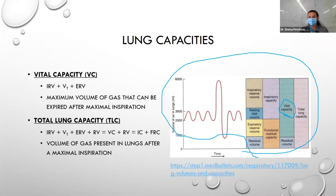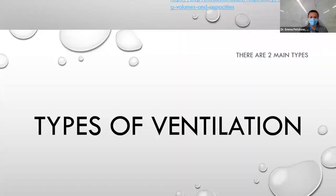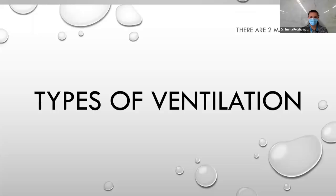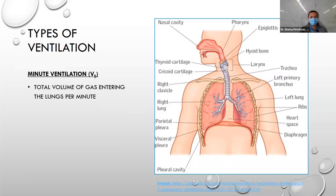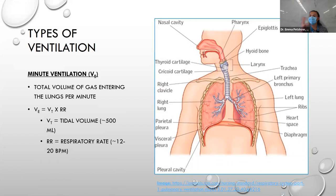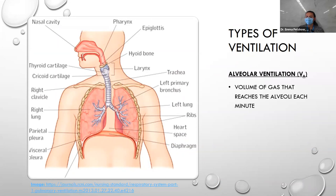There are two main types of ventilation. Minute ventilation (VE) is the total volume of gas entering the lungs per minute: VE = tidal volume × respiratory rate. Tidal volume is about 500 mL, and respiratory rate is how often you breathe per minute. Alveolar ventilation (VA) is the volume of gas that reaches your alveoli every minute: VA = (VT − VD) × respiratory rate, where VD is physiologic dead space.